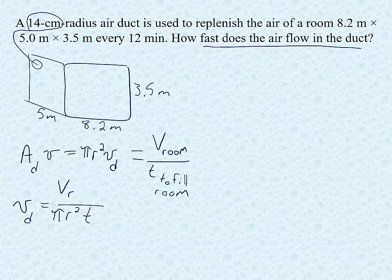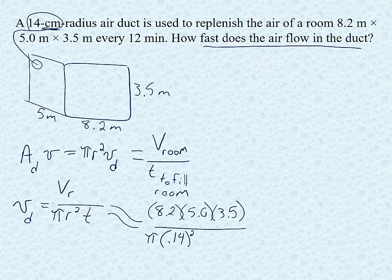So we've got all of our numbers up here at the top. Some of them are in different units than what we can use them for. So we'll have to change them a little bit. But this becomes the volume of the room, 8.2 times 5.0 times 3.5 divided by pi times the radius. Radius is 14 centimeters. So it becomes 0.14 meters squared times the time.